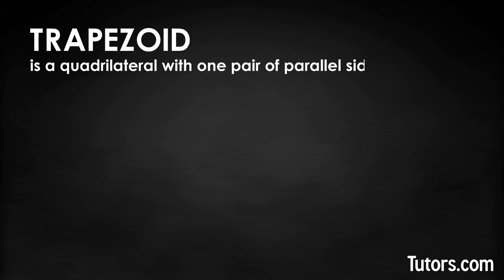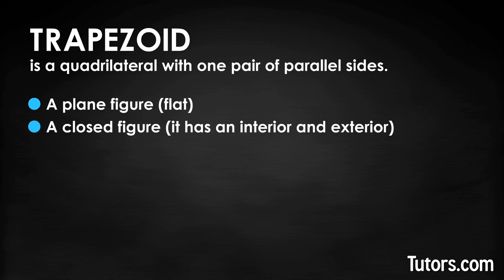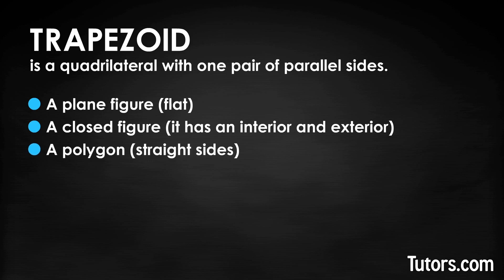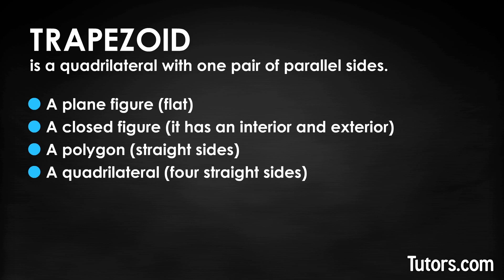A trapezoid is a quadrilateral with one pair of parallel sides. A trapezoid is a plane figure — flat — a closed figure with an interior and an exterior, a polygon with straight sides, and a quadrilateral with four straight sides.